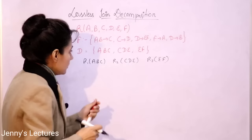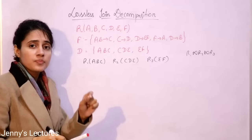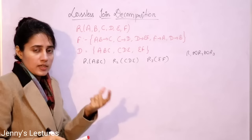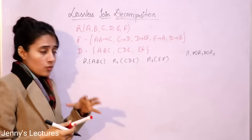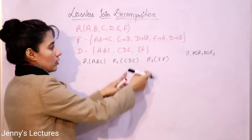It's not like we can do R1 natural join R2 natural join R3 all at one time, because natural join is a binary operator — you can join only two relations at a time. So the question is: which pair do you take first? Either R1 and R2, or R2 and R3, or R1 and R3 — you can take any pair.